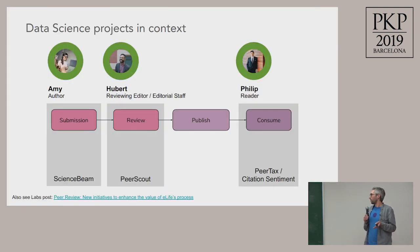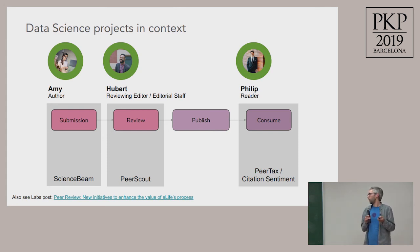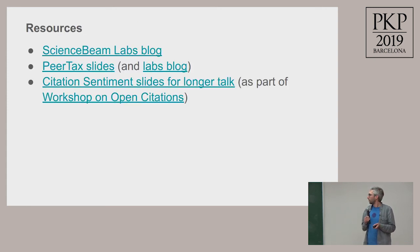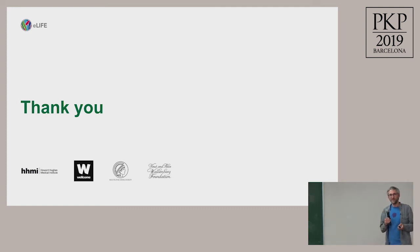To put these projects into context: ScienceBeam helps at the submission stage, PeerScout helps to find reviewers for reviewing editors or might help senior editors find reviewing editors depending on the setup, and then we have the other two projects — PeerTags and citation sentiment — that serve the reader in the final stage. Some links are available, and when I send out the slides you can read more about it. Thank you.